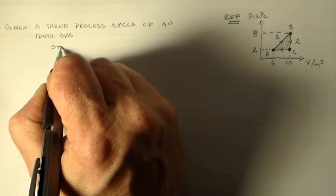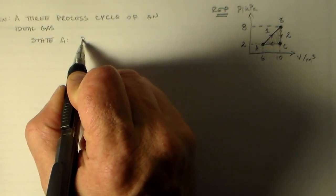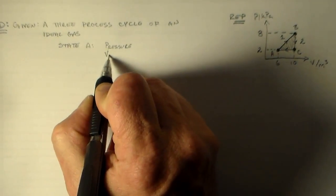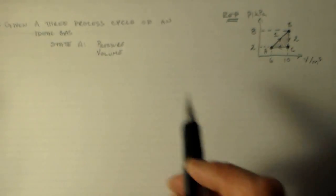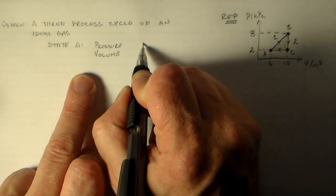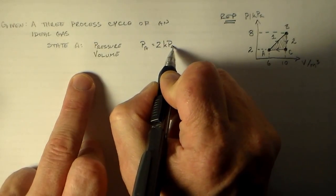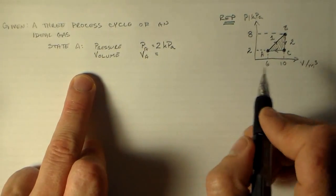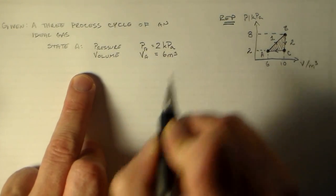Okay, so state A has characteristics of pressure and volume. The pressure is 2 kilopascals. PA is equal to 2 kilopascals. And VA is equal to 6 meters cubed.